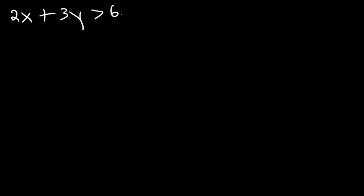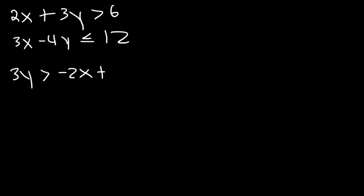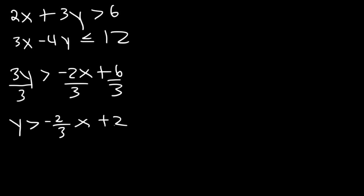Now let's say we have two linear equations in standard form: 2x plus 3y is greater than 6, and 3x minus 4y is less than or equal to 12. Instead of using test points, I like to solve for y. In the first equation, moving 2x gives negative 2x plus 6, then dividing by 3 gives y is greater than negative 2 over 3 times x plus 2. So this is the first equation to graph.